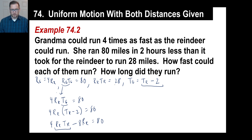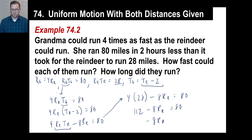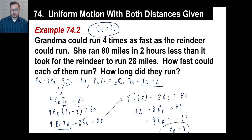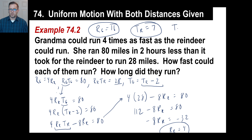Rate of the reindeer times time of the reindeer — there it is, that equals 28. So four times 28 is 112, minus eight times the rate of the reindeer equals 80. Moving 112 over: 80 minus 112 is negative 32, and negative eight times the rate of the reindeer equals negative 32, so the rate of the reindeer is four. Grandma runs four times as fast, so the rate of grandma is 16. The time of the reindeer is 28 divided by four, which is seven. And the time of grandma is seven minus two, which is five.